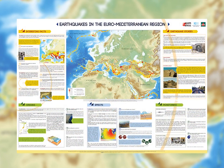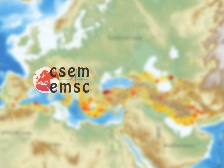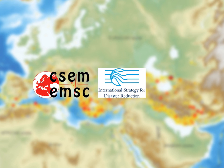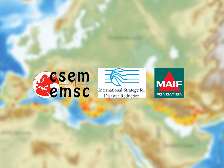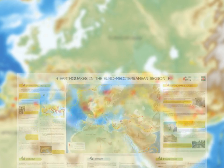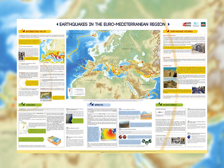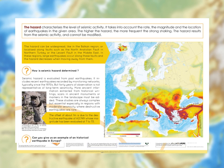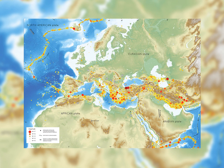The educational map presented in this video results from a collaboration between the Euro-Mediterranean Seismological Centre, the Secretary of the International Strategy for Disaster Reduction of the United Nations, and the Foundation MAIF, a French foundation associated with an insurance company. This map targets school students and the general public of the whole Euro-Mediterranean region. Our aim is to provide meaningful information on earthquakes and their effects, using examples applicable from Iceland to Iran and from Russia to Morocco.